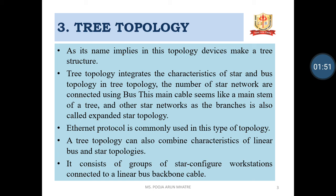A tree topology is a variation of star. As in a star, nodes in a tree are connected to a central hub to control the entire network. The central hub in the tree is an active hub which contains a repeater. The repeater amplifies the signals and increases the distance the signal can travel. There can be only one connection between two nodes in tree topology. Therefore, it is also called a parent-child topology.